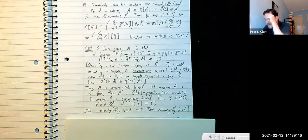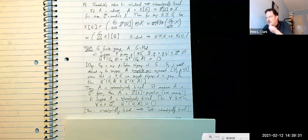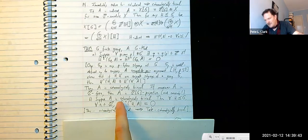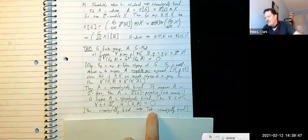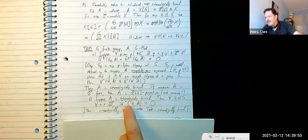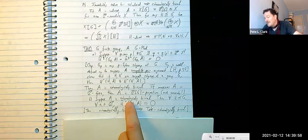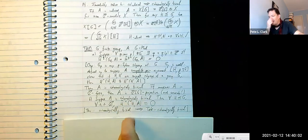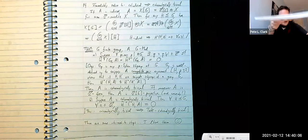Moreover, if A is Z-free then it is actually projective. The second part is a converse: suppose A is cohomologically trivial — then all of its Tate cohomology groups vanish, which strengthens from ordinary cohomology to Tate cohomology.